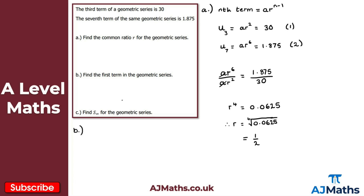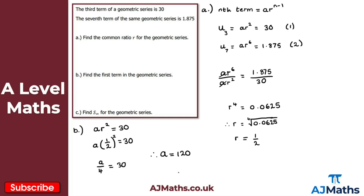For part B, we have to find the first term. There are two ways: we can work backwards since the third term is 30 — doubling gives second term 60, and doubling again gives first term 120. Alternatively, using AR squared equals 30 with R equals a half: A times a half squared equals 30, so A over 4 equals 30, giving A equals 120.